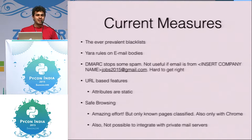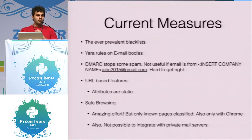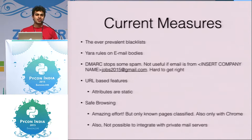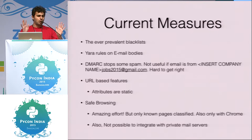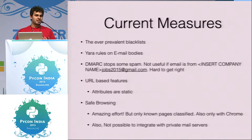People say: download the Alexa top 5 million domains and only allow clicks on those domains, showing a warning for anything else. But those approaches only make it slightly harder to get compromised without stopping the problem. DMARC does a good job stopping spam, but not phishing URLs — because attackers create identities like 'mycompanyjobinterviews2015@gmail.com' and you can't block gmail.com.